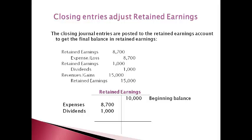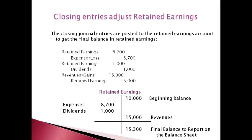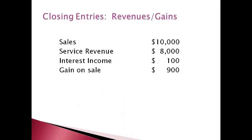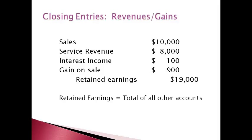The final balance for retained earnings is reported on the current period balance sheet. Revenue and gain accounts have credit balances, and therefore it takes a debit to these accounts to get a balance of zero. Retained earnings is the credit, and the amount is the total of all the revenue and gain accounts. This entry moves all revenue and gain accounts into retained earnings.